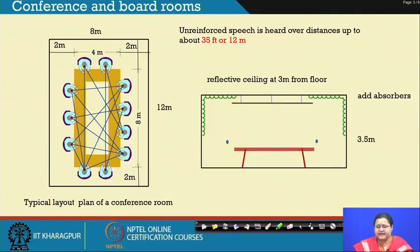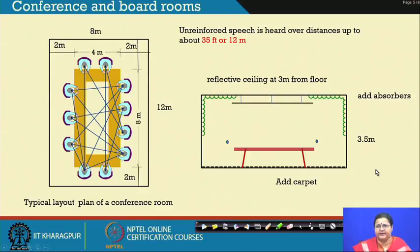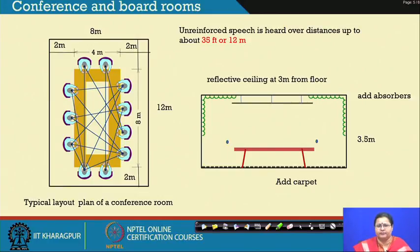Reflective ceilings at 3 meters from the floor are encouraged, and even a lower reflective ceiling is preferred. Beyond that, absorbers are preferred. Carpets at the floor of the conference hall are recommended so that foot sound is not encouraged. Foot sound can be controlled by carpet; however, that does not make much of a difference to the reverberation time.